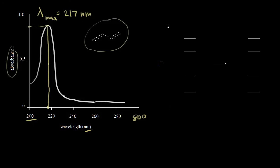Let's look at the dot structure of butadiene more carefully. We have four carbons, and all four of these carbons are each sp2 hybridized, which means each one has a p orbital. So we're talking about four p orbitals, or four atomic orbitals. When dealing with molecular orbital theory, four atomic orbitals recombine to form four molecular orbitals — two bonding molecular orbitals and two antibonding molecular orbitals. Let's look at those four molecular orbitals.